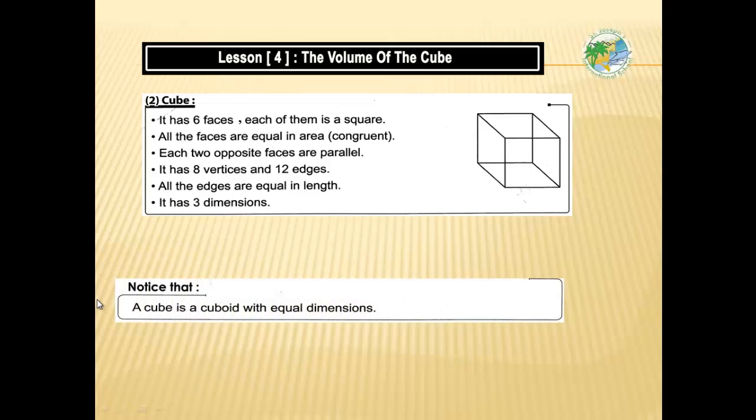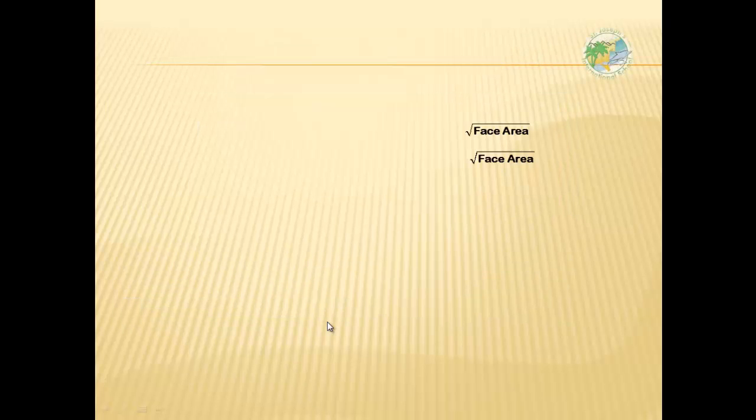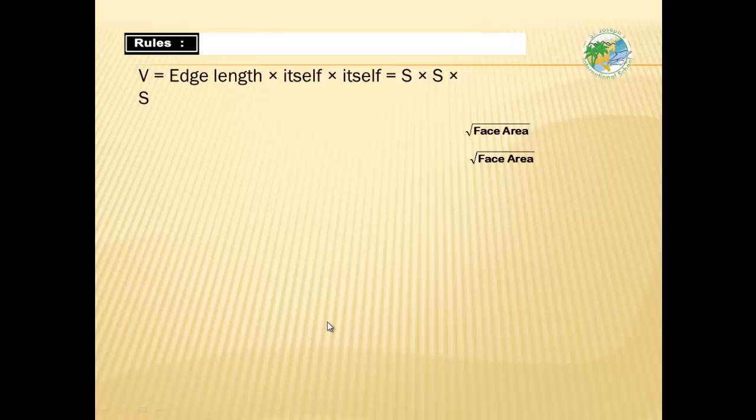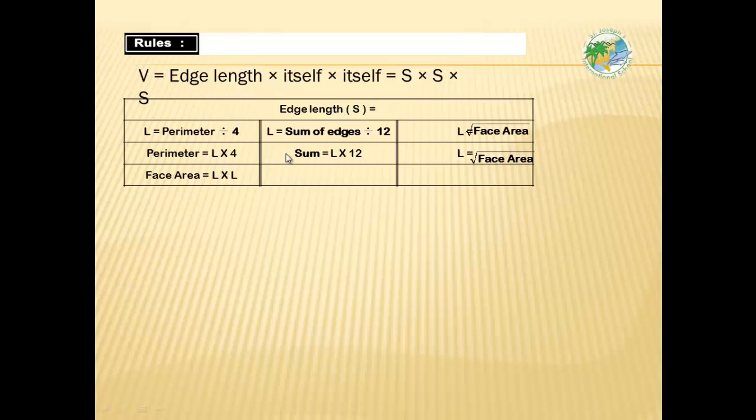We can say the cube is a cuboid with equal dimensions. Now the rule to find and calculate the volume of the cube: the volume equals edge length times itself times itself. From this table, it's a very important table. We can calculate the edge length. The important dimension for the volume is the edge length. If we have edge length, we can calculate the volume of the cube. Then, if you want to calculate the volume from perimeter, as we said before, each face in the cube is square.